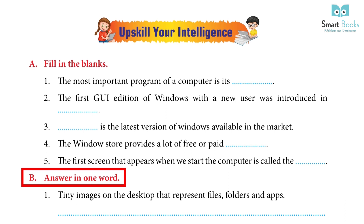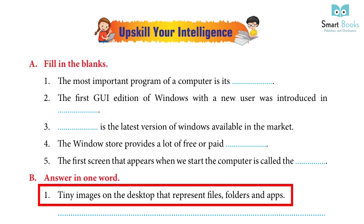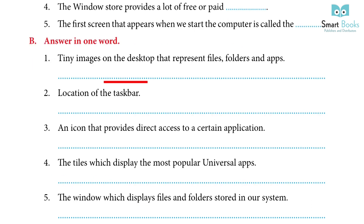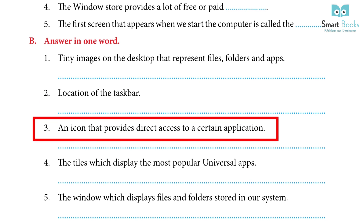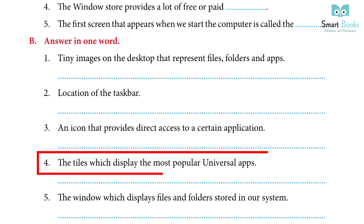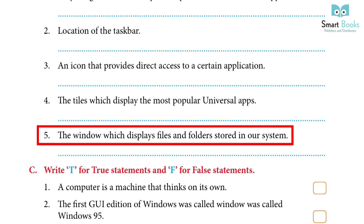Answer in one word: 1. Tiny images on the desktop that represent files, folders, and apps — Answer: Icons. 2. Location of the taskbar — Answer: Desktop's bottom. 3. An icon that provides direct access to a certain application — Answer: Shortcut icon. 4. The tiles which display the most popular universal apps — Answer: Live Tiles. 5. The window which displays files or folders stored in our system — Answer: File Explorer window.